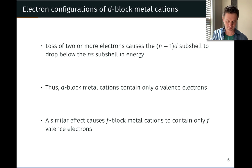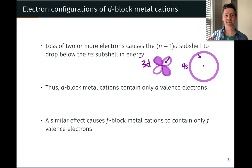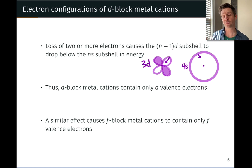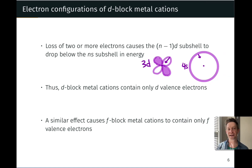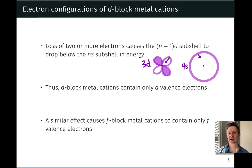Here's essentially the setup. In a neutral transition metal atom in, say, the fourth period — the first row of the transition metal series — we've got generally two 4S electrons. The 4S subshell is filled, and we've got some number of 3D electrons and a matching number of protons. When we remove an electron from the atom, it increases the positive charge felt by all the electrons, which will pull all of those negatively charged electrons closer to the nucleus.